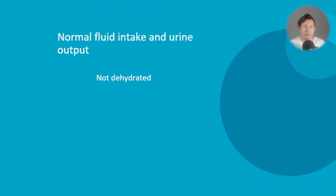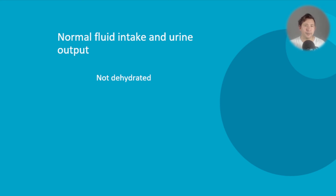The absolute key thing to mention is if a child has completely normal fluid intake and completely normal urine output, they're highly unlikely to be dehydrated. That's a well-validated statement — there's good evidence in the medical literature to support it. So normal fluid intake, normal urine output: in all but the rarest of cases, the child's going to be well hydrated.